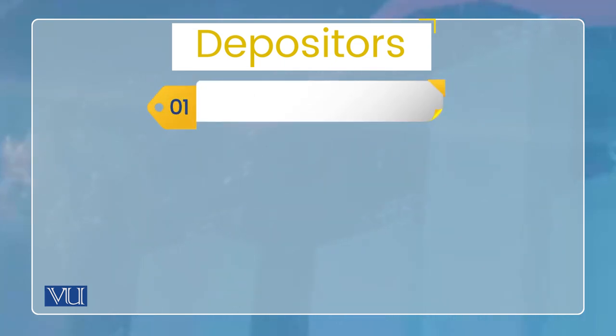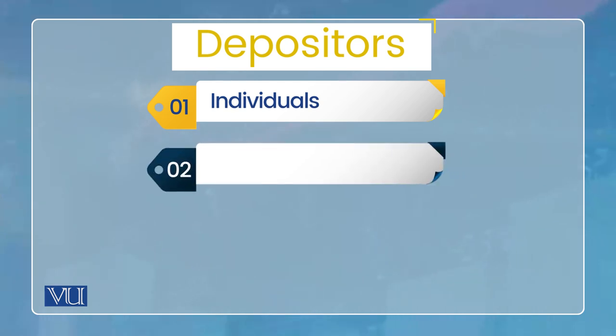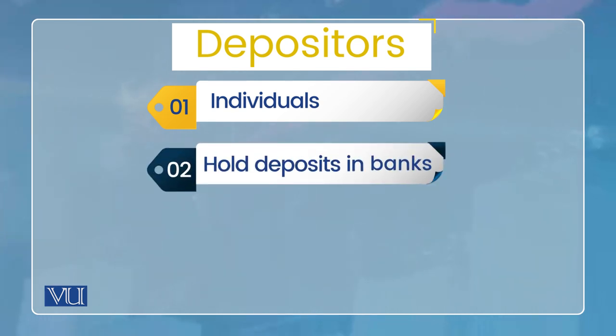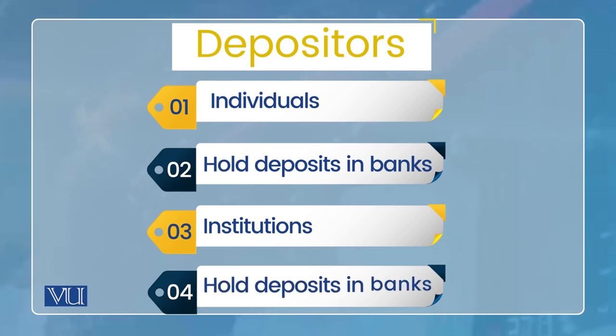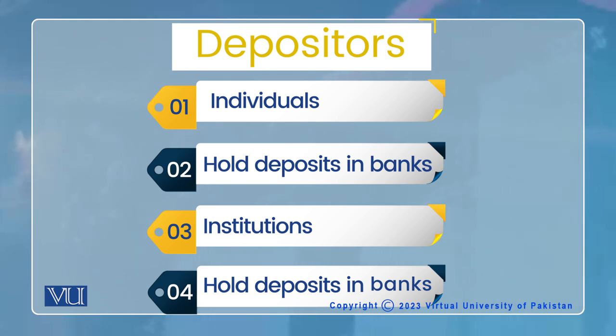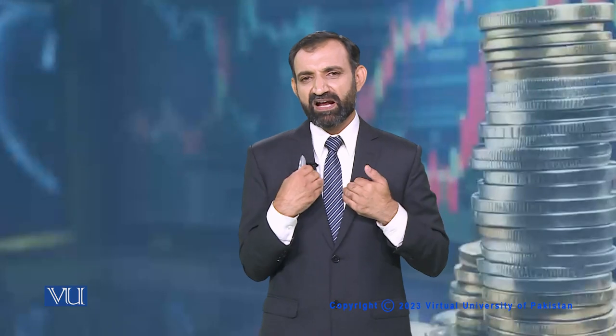Finally, depositors — what is the role of depositors and what benefit do they get from banks? Depositors are individuals and institutions. An individual, a university, or an institution — if you open a bank account, then you will have a bank account with the bank. This means that the individual's bank account contributes to the bank's funds.